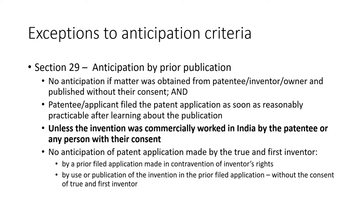Also, in the case of a patent application made by the true and first inventor, there would be no anticipation by a prior filed application made in contravention of the inventor's rights. In other words, if someone stole the rights of the inventor or did not give due credit and filed a patent application, that application would not anticipate a later application filed by the true and first inventor.